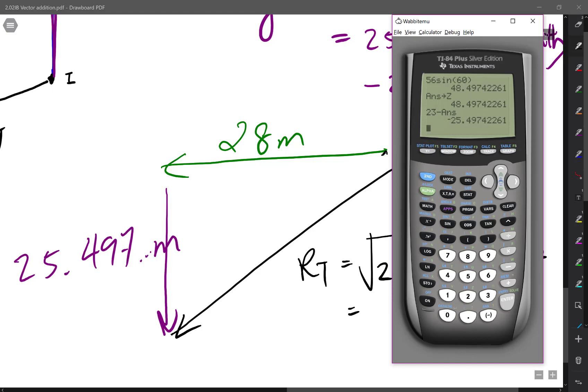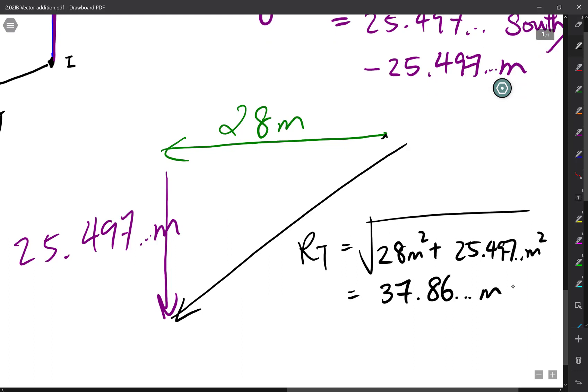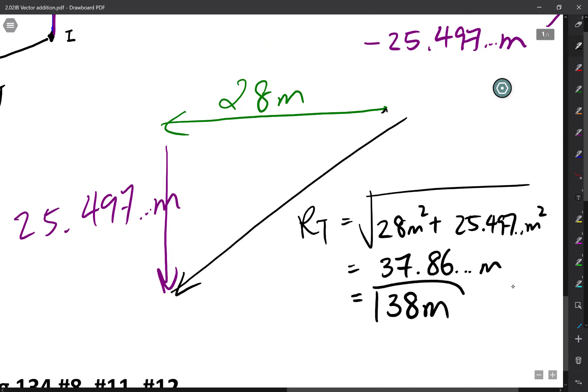And on my calculator, I square that number, I add 28 squared, and let's see, I'm actually going to save this number, square this number, plus 28 squared, take the square root, I get 37.86, 37.86, and I'm just going to round this up to 38 to two significant figures.